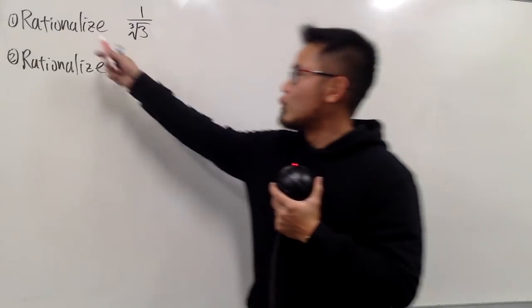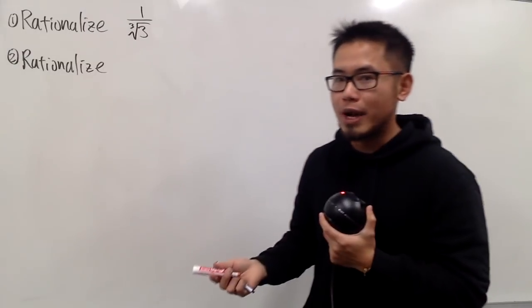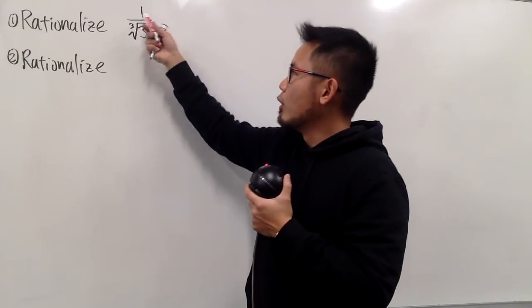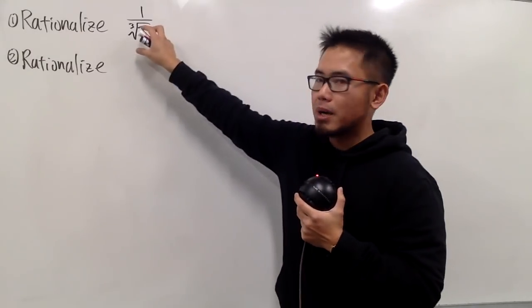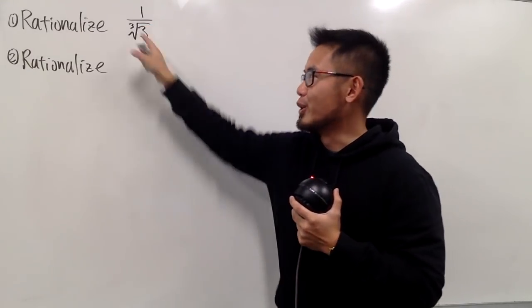We know that we can rationalize the denominator even when we have a cube root, right? So, for example, 1 over cube root of 3. The idea is that as long as we can produce a perfect cube on the bottom, then we can say bye-bye to the cube root.